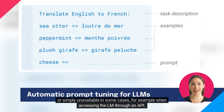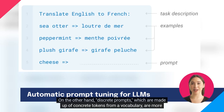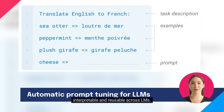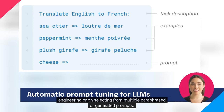which can be expensive to compute or simply unavailable in some cases — for example, when accessing the LM through an API. On the other hand, discrete prompts, which are made up of concrete tokens from a vocabulary, are more interpretable and reusable across LMs. However, optimizing these prompts is much more difficult, and previous approaches have either relied on manual engineering or on selecting from multiple paraphrased or generated prompts.